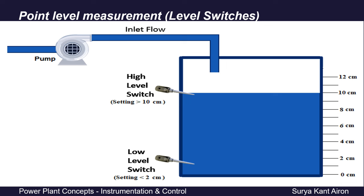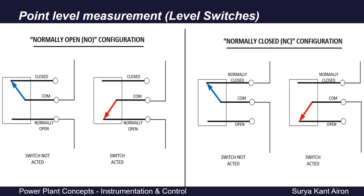For example, suppose we want to fill a tank with a pump. When the tank level is below a certain level we want to fill the tank, and once the level reaches the higher set point we want to switch off the pump. In this simple case we use two level switches: one low level switch that completes the pump's electrical circuit when the tank level goes below 2 centimeters, and one high level switch that acts when the tank level reaches above 10 centimeters to stop the pump by opening the circuit.